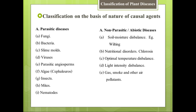Number five is gas, smoke, or other air pollutants. Jo hawa mein smoke hai, dhuan hai, ya air pollution hai — sulfur dioxide wagera — un ki waja se bhi podon mein disease paida hoti hai. Next is careless spraying of chemicals — agar hum galat tarike se spray karein ya spray zyada chala jaye podon ke upar, to is tarah bhi podon mein disease paida hoti hai.